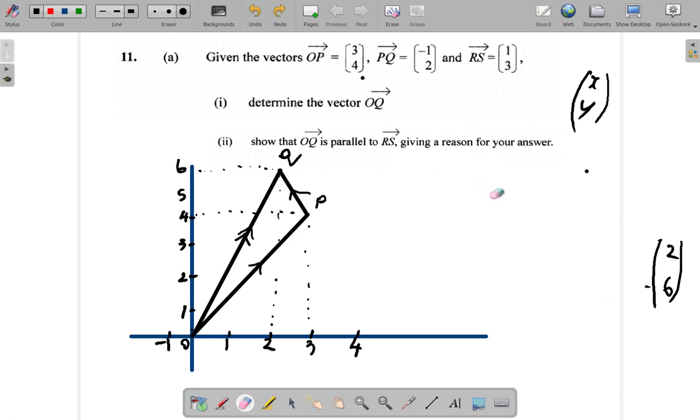Now let me just erase some of this working. This was OQ. So let me just rewrite it before I forget. OQ is (2, 6). RS is (1, 3).